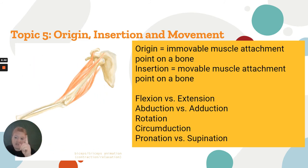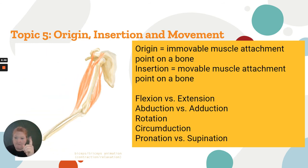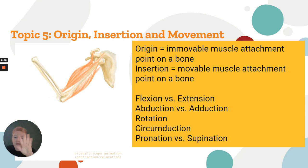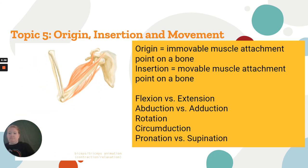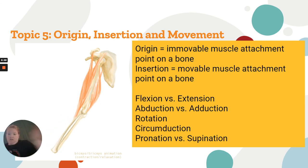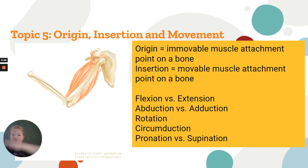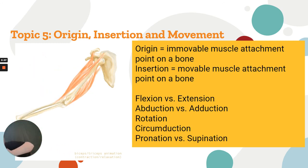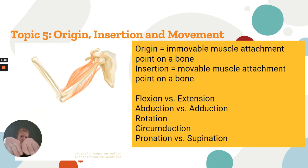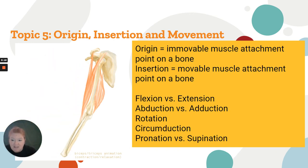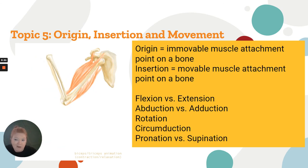We have movements like flexion, extension, abduction, adduction, rotation, lateral rotation, medial rotation, and circumduction — those are the big arm circles. We also have pronation, supination, and turning the arm inward. Those are just a fraction of the movements we talked about, but that's a quick overview.